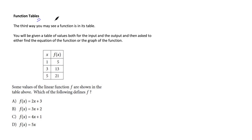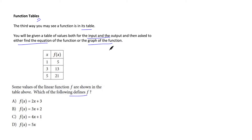The third scenario is function tables. The third way you may see a function is in a table — you're given values for both input and output and asked to find the equation of the function or graph it. Here: some values of a linear function f are shown in the table. We need to form the equation using y − y₁ = m(x − x₁), so let's find the slope first.